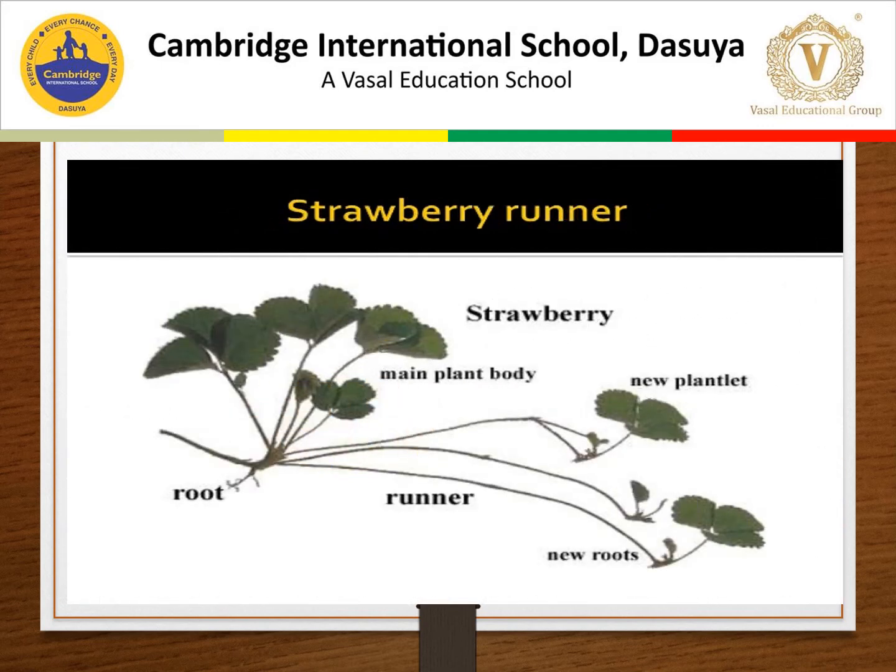Vegetative propagation by stem takes place in sub-aerial underground stems, for example in grasses. Stems grow along the surface of soil and produce roots where they touch the ground. The lateral branches that run horizontally are called runners. Other examples include strawberry through stolons, and underground stems like ginger, potato, and onion. The eyes present in potato and the rhizome of ginger give rise to shoots under favorable conditions.